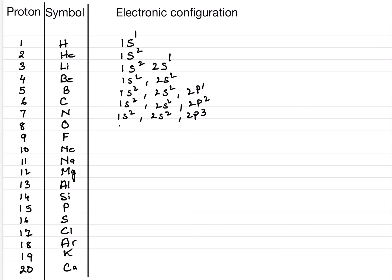Oxygen is 1S2 2S2 2P4, giving 8 electrons total. Fluorine has atomic number 9, so it is 1S2 2S2 2P5. Next comes neon, a noble gas: 1S2 2S2 2P6, giving 10 electrons. Neon has a complete octet and all orbitals are filled up.